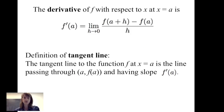It also seems reasonable to say that the tangent line to the function f at x equals a is the line that passes through the point (a, f(a)) and has a slope of f prime of a, or the derivative of f at a.